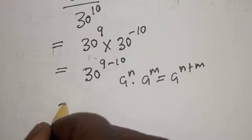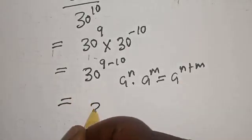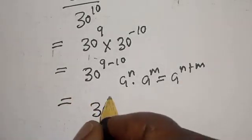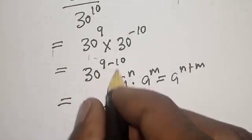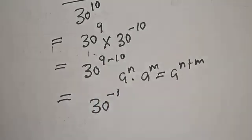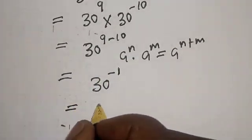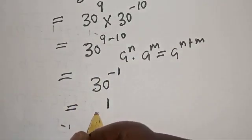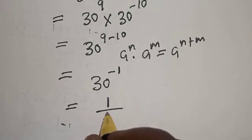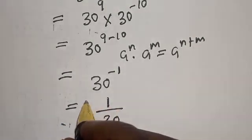This is equal to 30 raised to power 9 minus 10, which gives 30 raised to power negative 1. Then, this is equal to 1 divided by 30.